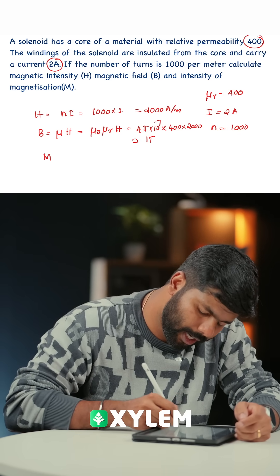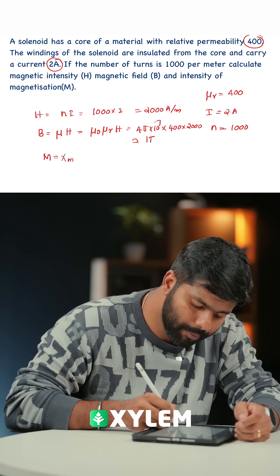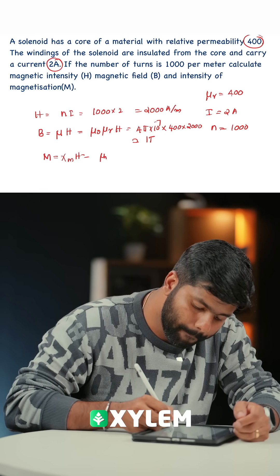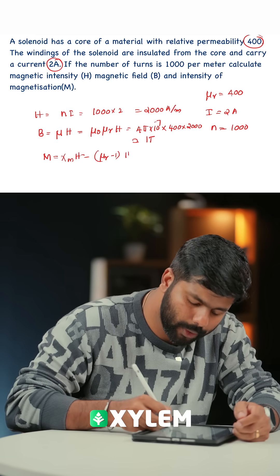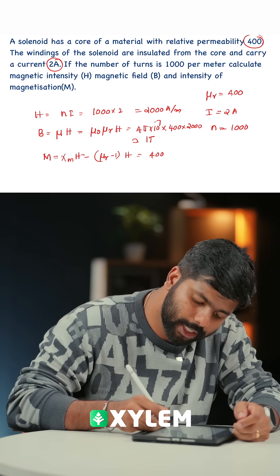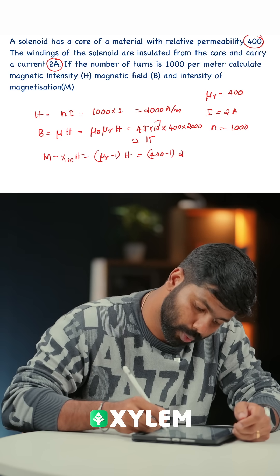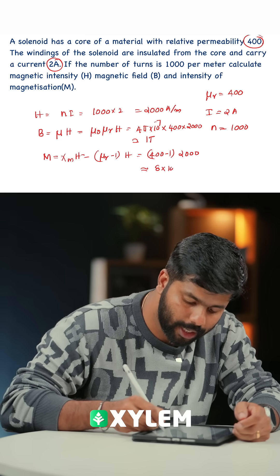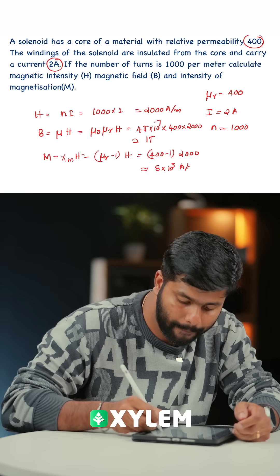Then 3 is M. M is equal to χm into H. χm is equal to μr minus 1 into H. That will be 400 minus 1 into 2000. The answer is approximately 8 into 10 raise to 5 ampere per meter.